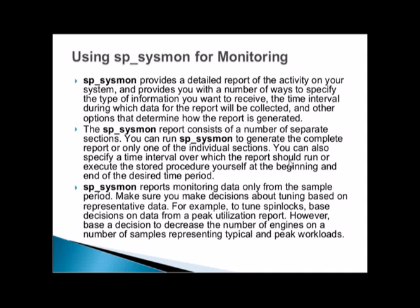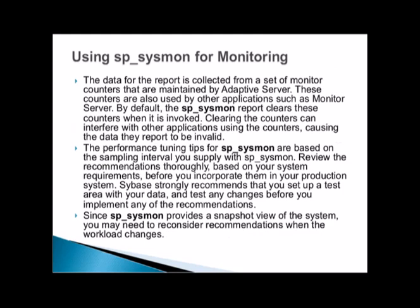You can run sp_sysmon to generate the complete report or only one of the individual sections. You can also specify a time interval over which the report should run, or execute the stored procedure yourself at the beginning and end of the desired time period. sp_sysmon reports monitoring data only from the sample period, so you must specify a sample period. Make sure you make decisions about tuning based on representative data — for example, tune spin locks based on data from peak utilization, and base decisions to decrease the number of engines on samples representing typical and peak workload.